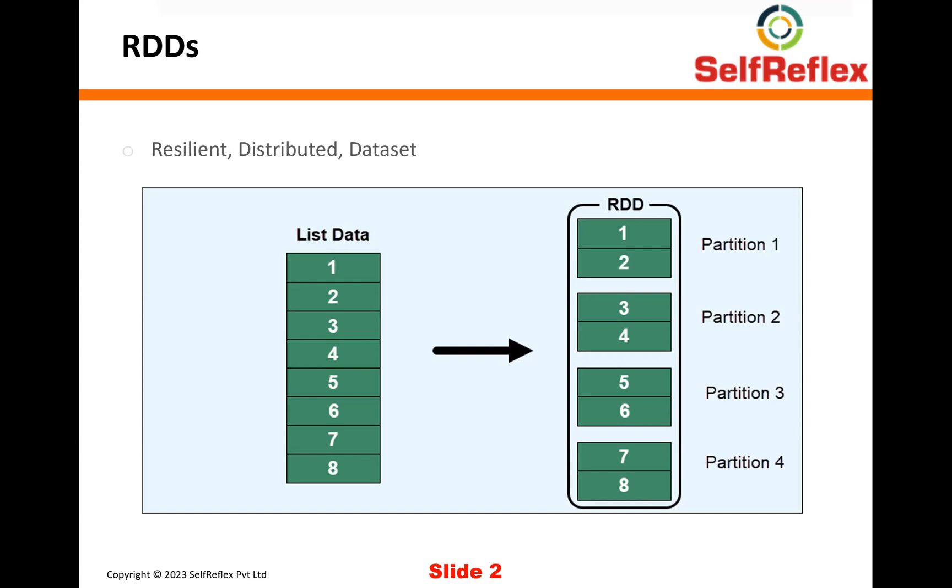Now internally, Spark can actually distribute these four partitions on two different machines. And any operations that you are performing on this data set can be actually run in parallel on all those partitions on different machines, which makes the processing very fast.